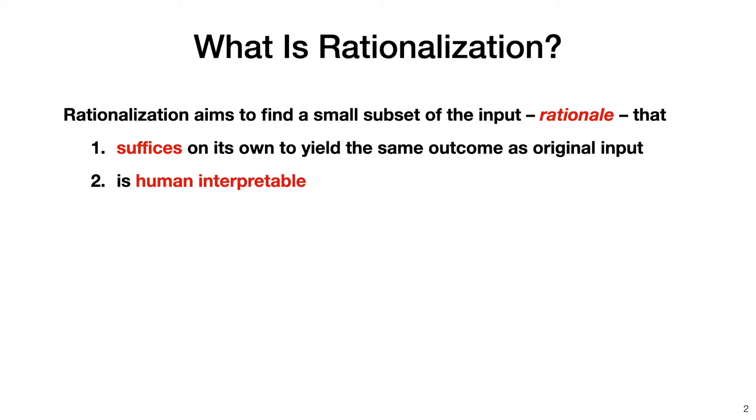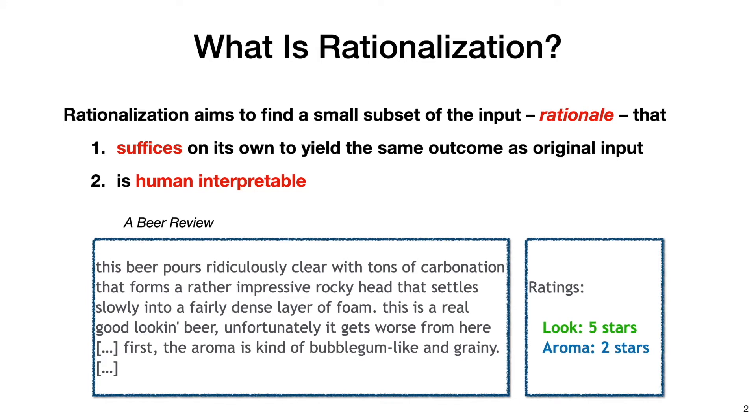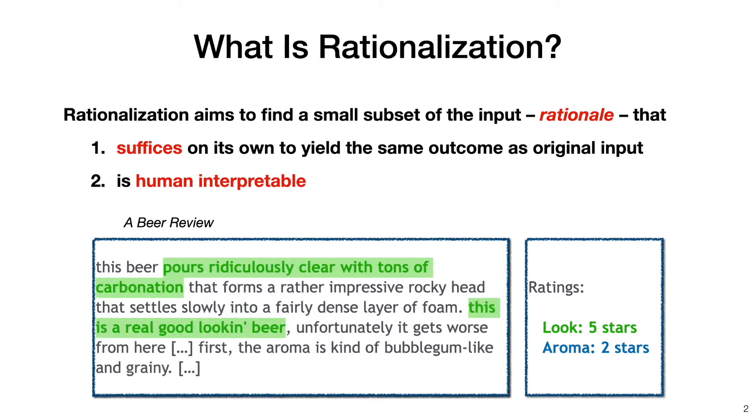As an example, here is a beer review, and the task is to predict the ratings of the different aspects of the beer. Then the selected rationale for the look or appearance rating should best explain why the appearance is 5 stars. An example rationale can be, pours ridiculously clear with tons of carbonation, and this is a real good looking beer.